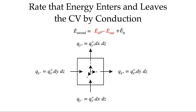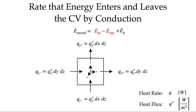Next we look at the conduction terms — the rate energy enters the faces minus the rate it leaves. We're looking at energy conducted through, for example, the y-plus face. We can express heat transferred either as the heat rate Q in watts, where Q equals the heat flux (in watts per meter squared) times the face area. So the total heat rate through the y-plus face is the heat flux times the face area DX·DZ. Similarly for the x-plus face. As long as we apply these consistently in our energy in versus energy out equation, we will get the right answer.